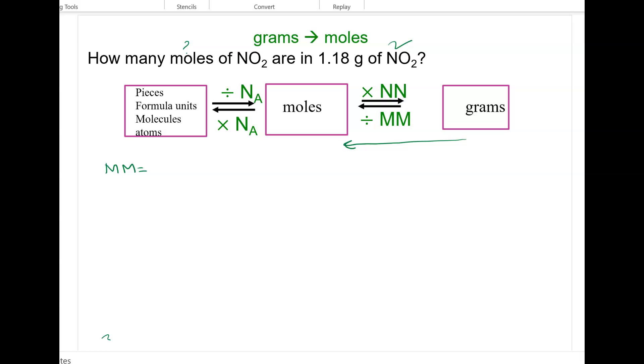The molar mass of NO2 is going to be the mass of nitrogen, which is 14.00 grams per mole, plus 2 times the mass of oxygen, which is 16 times 2, or 32 grams per mole. And when we add them, we'll get 46.0 grams per mole for NO2.